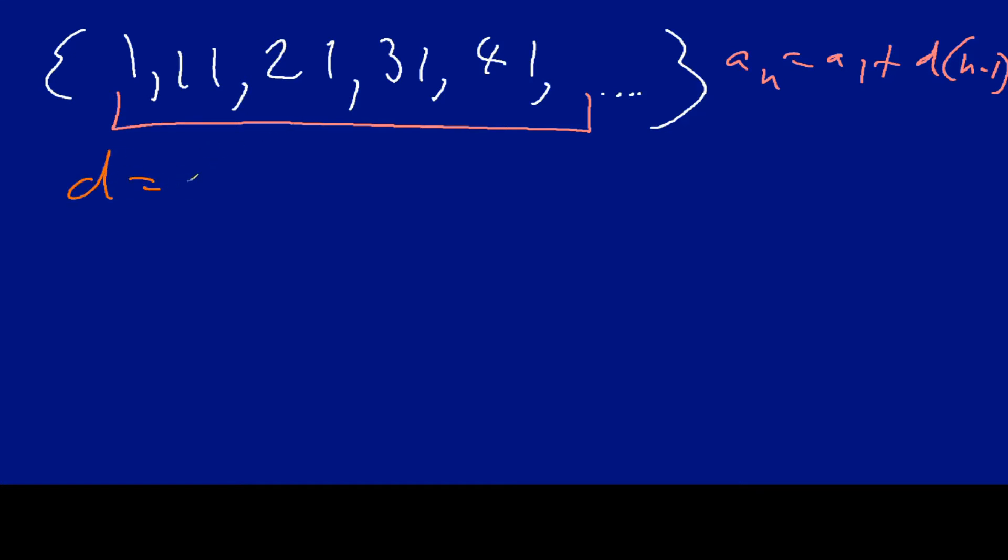and we do that by taking a sub 2 minus a sub 1. That's what we're doing in this situation, and so that means we're going to be taking 11 minus 1, which means that our difference is going to be 10, like so. There we go, 10.